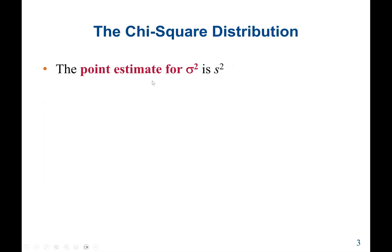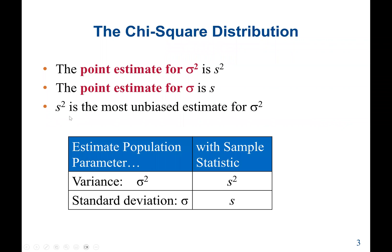The point estimate for population variance is the sample variance. Also, the point estimate for population standard deviation is the sample standard deviation. A sample variance is the most unbiased estimate for population variance. So here we have the estimated population parameters — variance and standard deviation for the population.